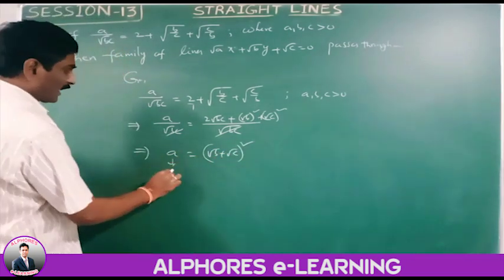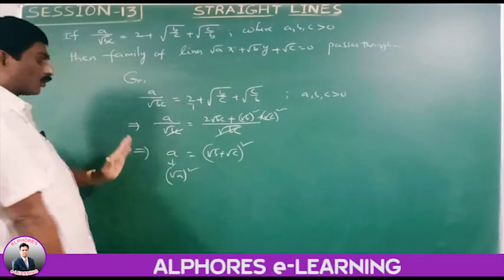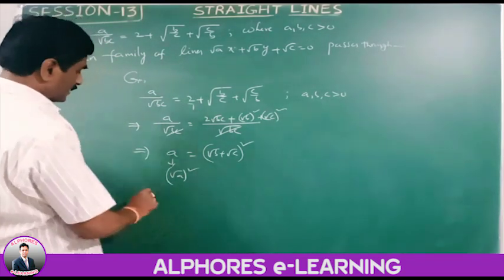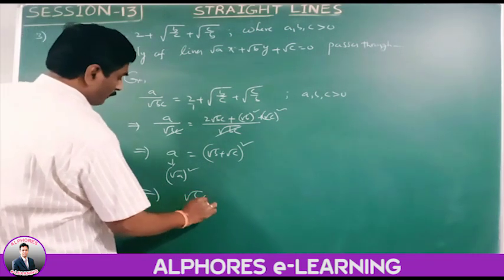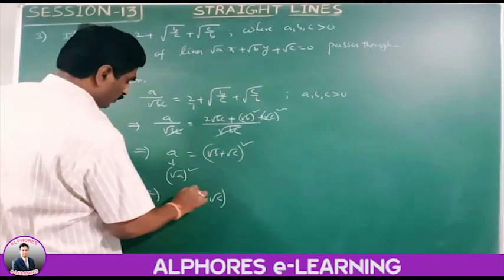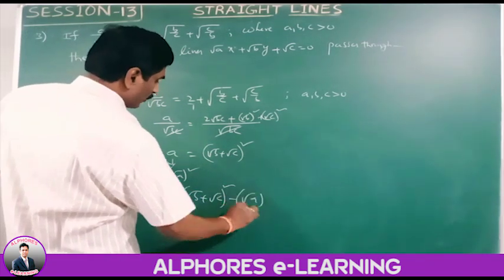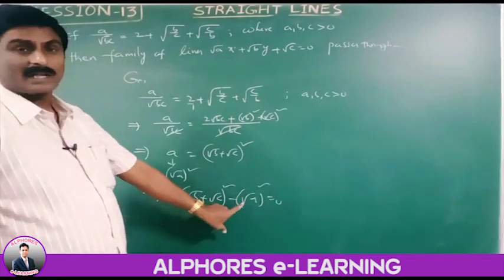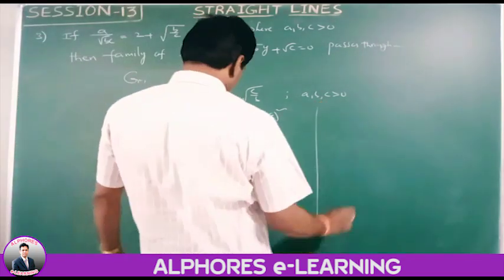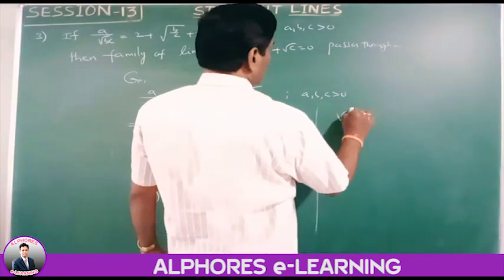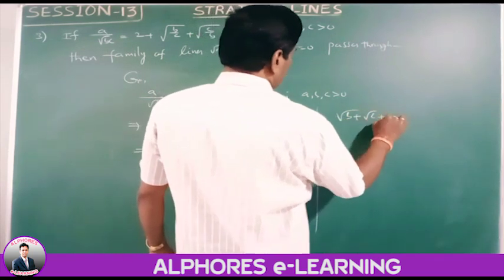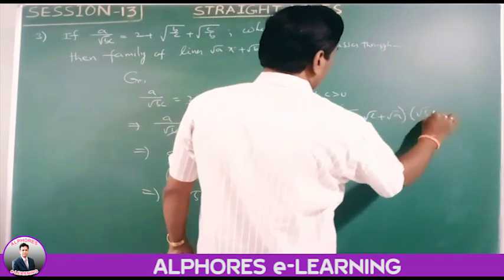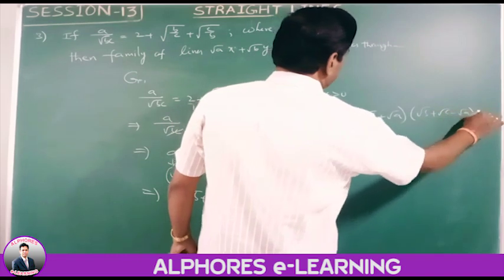Since a equals (root(b) plus root(c))², we have root(a)² equals (root(b) plus root(c))². Moving to RHS: (root(b) plus root(c))² minus (root(a))² equals 0. Factoring as a difference of squares: (root(b) plus root(c) plus root(a))(root(b) plus root(c) minus root(a)) equals 0.